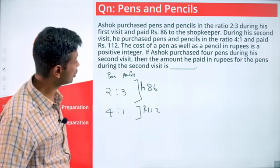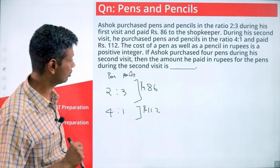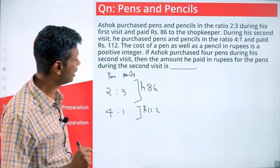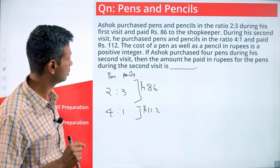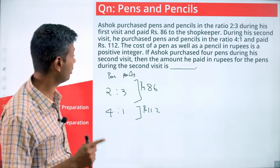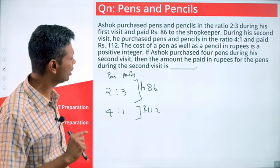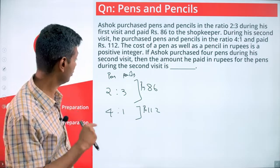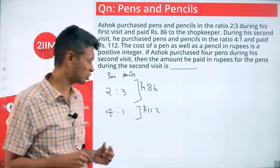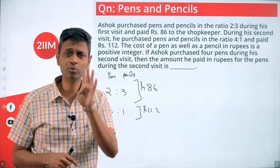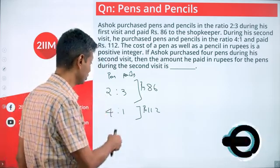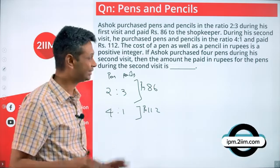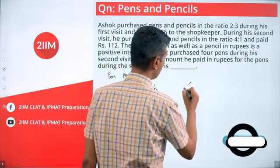If Ashok purchased 4 pens during his second visit, then the amount he paid in rupees for the pens during the second visit is - he purchases 4 pens during his second visit, so the ratio is not just 4:1, it is 4 pens and 1 pencil. Now this is wonderful, I don't want to deal with the ratio.